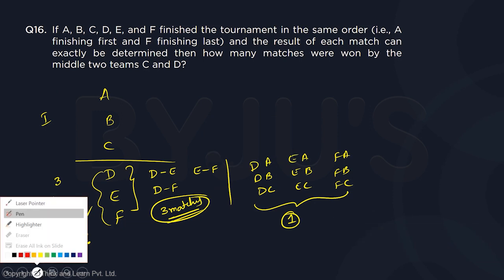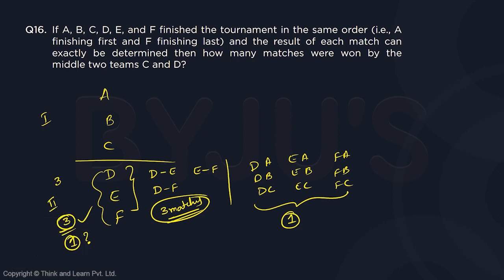Now let us understand what is happening in group 1. How many points will be there with A, B, C? The total number of matches with six teams is 6C2 = 15. So totally there are 15 matches and 15 points. If 3 or 4 are going to group 2, then group 1 will end up with either 12 or 11. This is the logic you need to understand first.